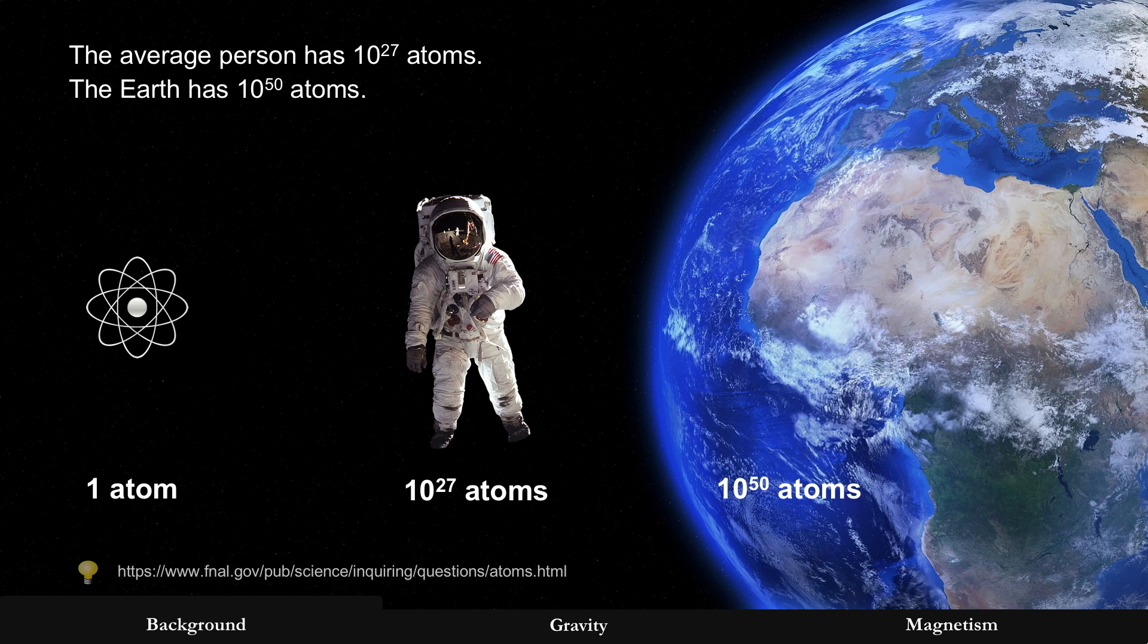Now the average person has 10 to the 27th power number of atoms. That's a lot of atoms. You can see an atom there, a single atom on the far left. But that pales by comparison to the earth, which has 10 to the 50th power of atoms.